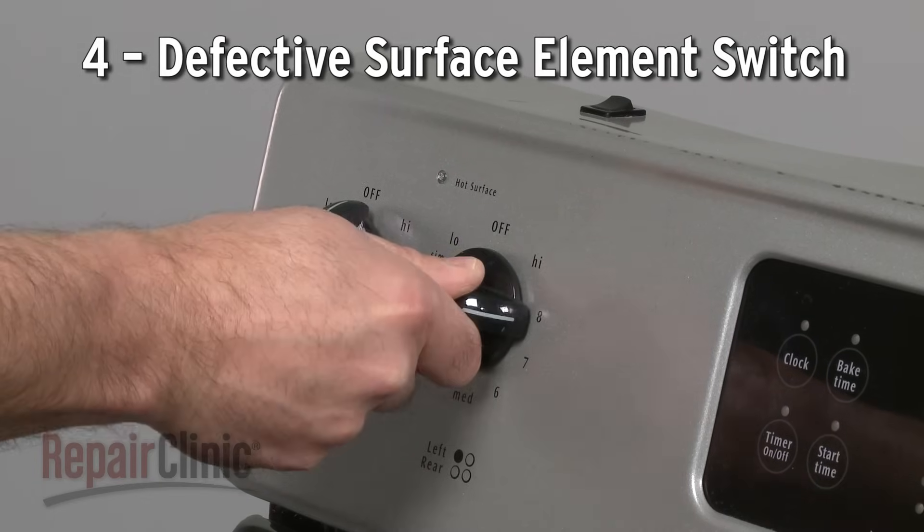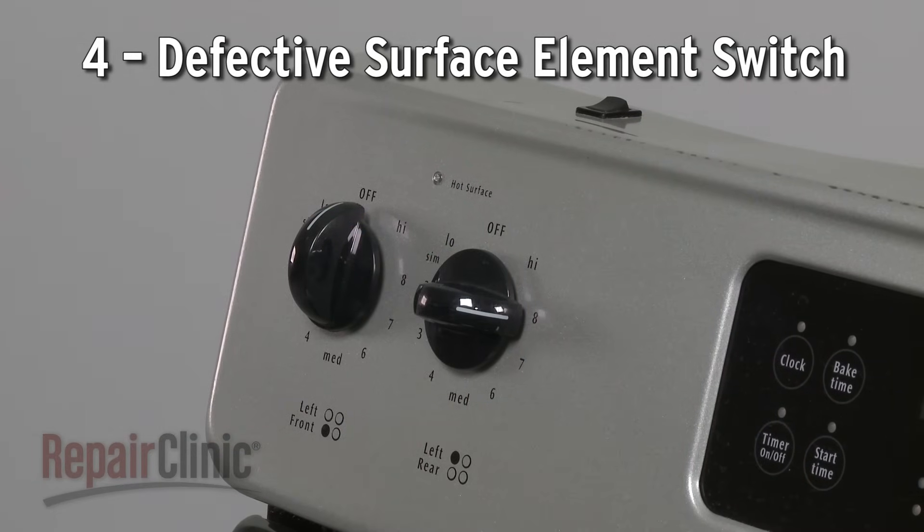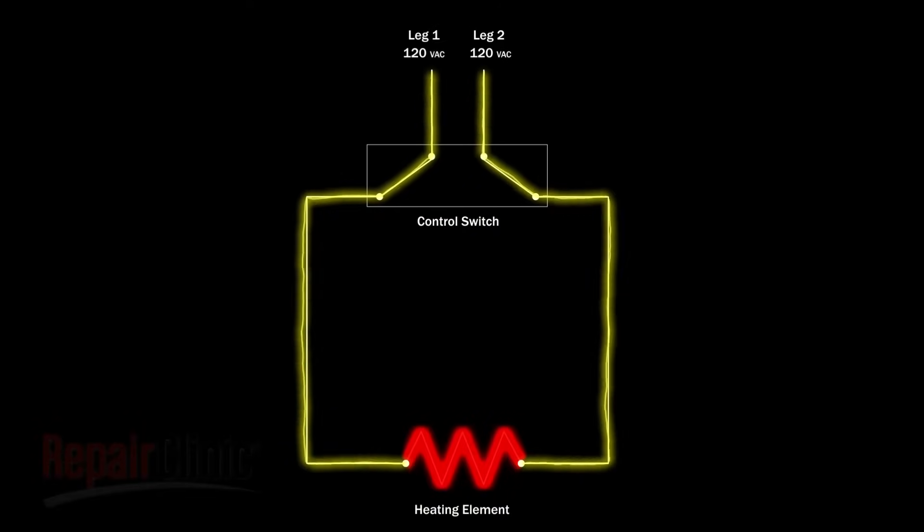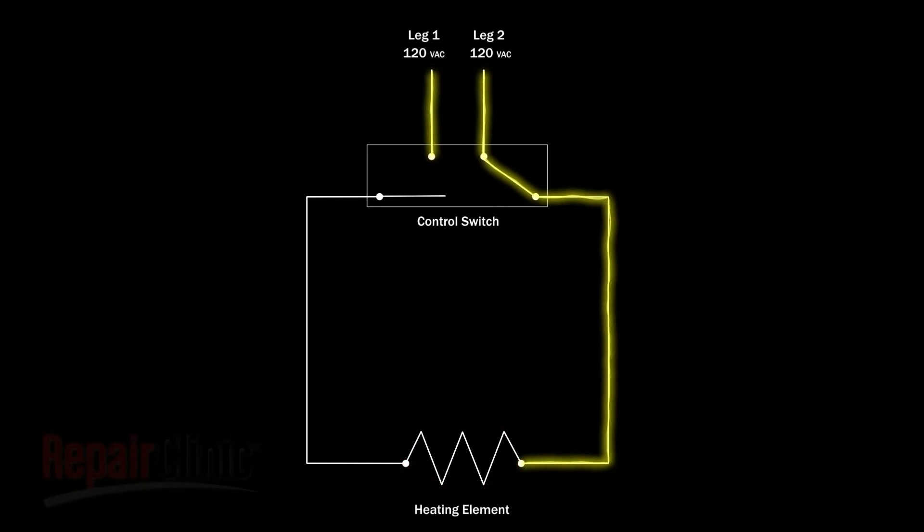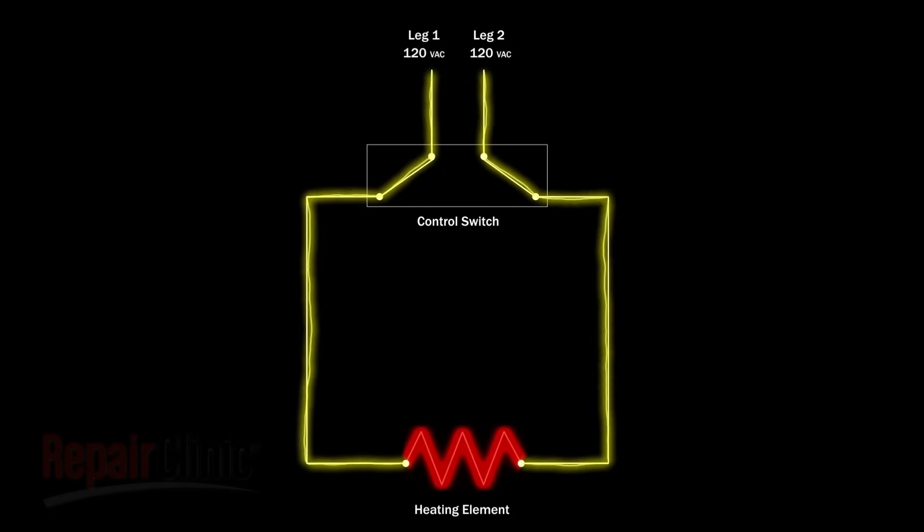The surface element switch could be defective as well. The switch regulates the element. When the element reaches the designated temperature, the switch shuts off the voltage. This cycle repeats throughout the cooking process to maintain the proper temperature.